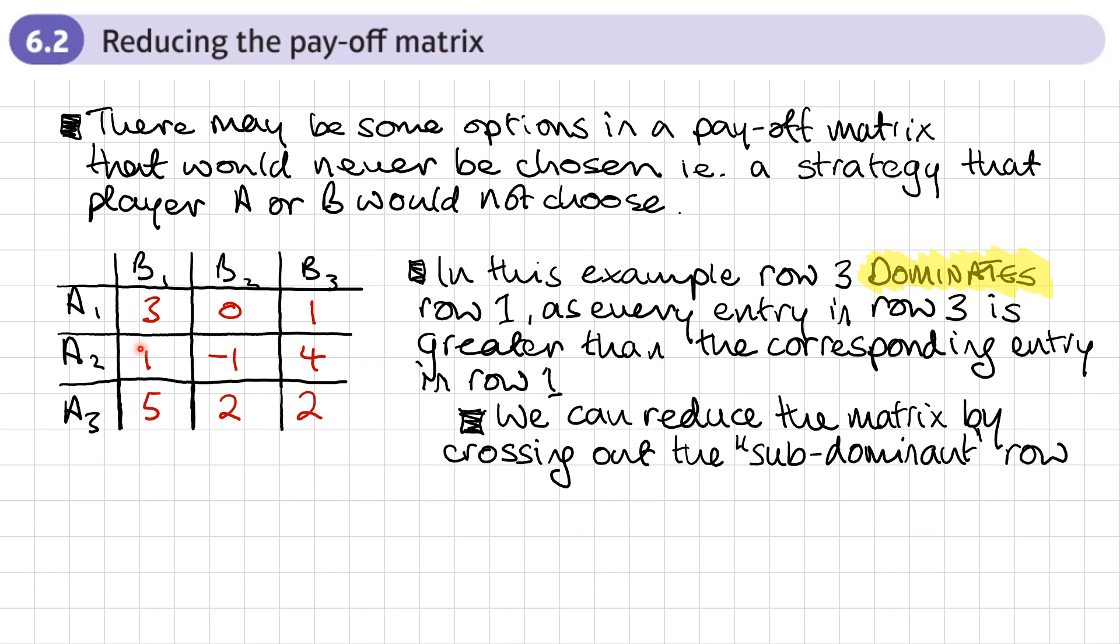So they're now looking at a column. And what they're looking for in terms of dominance is a column where these values are lower. Each entry is smaller than in another column because they'd have no incentive to choose that column. So for player A's perspective, dominance means each entry is larger. For player B's perspective, we're looking for a column where each entry is smaller. Now let's have a look.